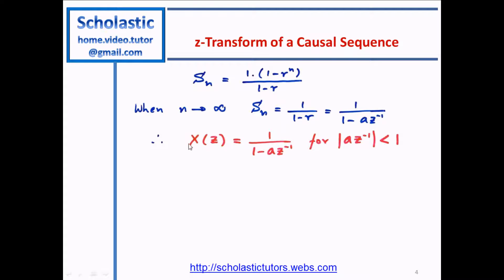We must ensure R is less than 1. R equals A times Z to the minus 1, so the modulus of A times Z to the minus 1 must be less than 1. If R is greater than or equal to 1, the function will keep increasing and there will be no finite limit. Therefore, our condition is that the modulus of A times Z to the minus 1 must be less than 1, which means Z must be greater than A.